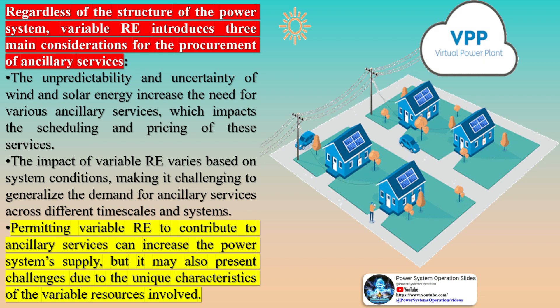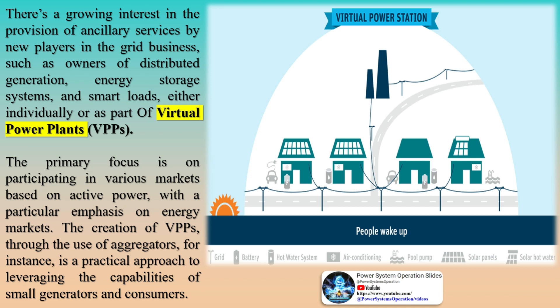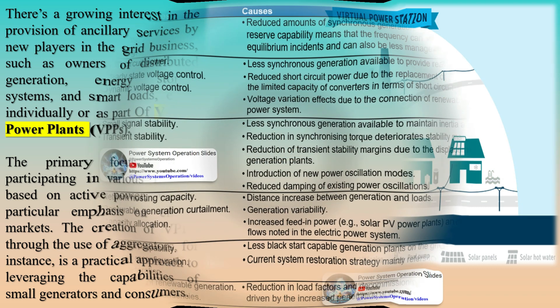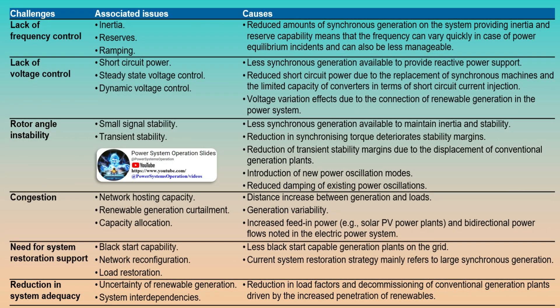Controlling frequency and voltage has always been one of the main technical requirements for ancillary services and a critical task in operating an electric power system. Following the liberalization of the electricity sector in many countries, system operators were able to obtain these support services from other market participants. Since the liberalization process has progressed independently in different regions and each electric power system has its own specific characteristics, technical definitions for ancillary services can vary considerably, depending on the power system and regulatory framework.